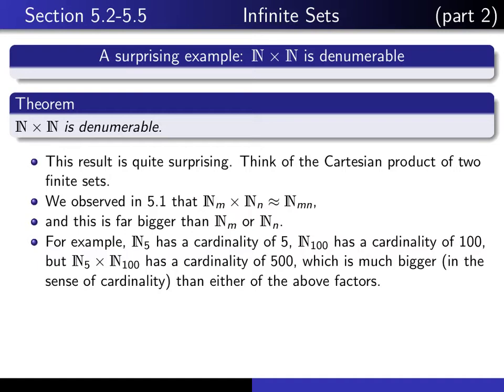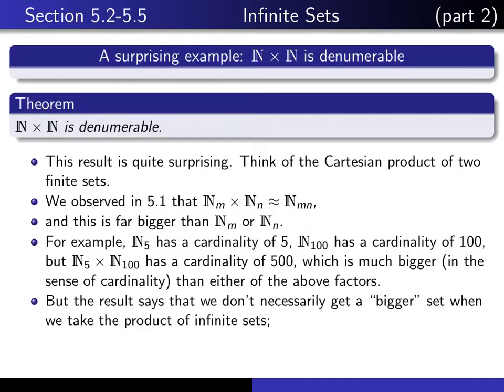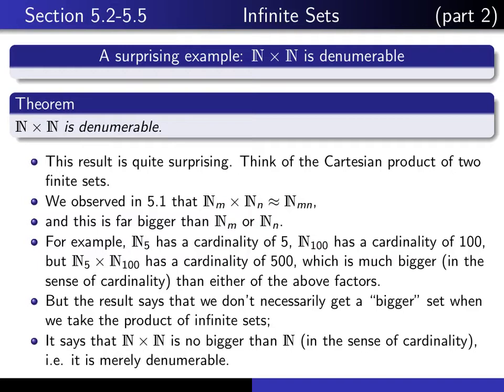So that has a cardinality of 500, which is a much bigger cardinality than either of the two factors, n5 or n100. So if you're only looking at finite sets, you sort of expect when you take Cartesian products that things really get bigger.